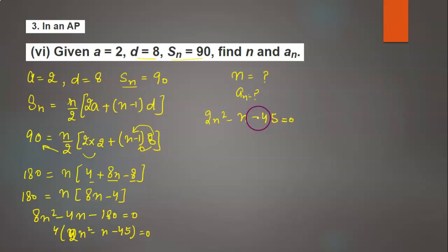Now use middle term splitting. So we will get 2n² minus 10n plus 9n minus 45 equals 0.